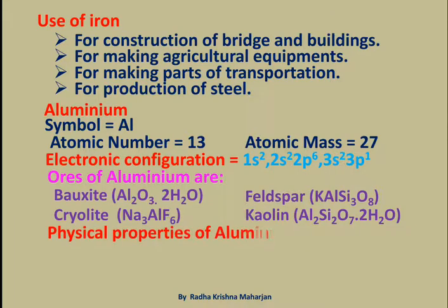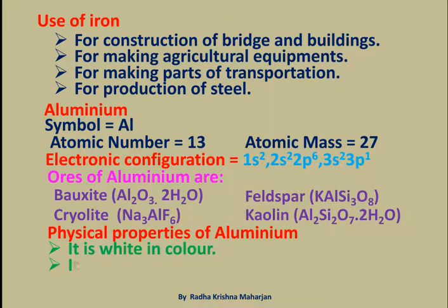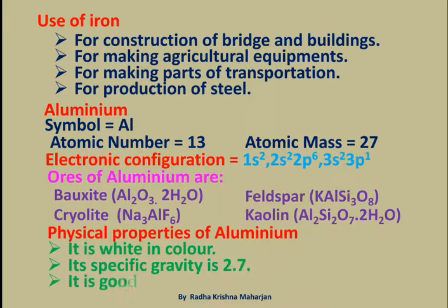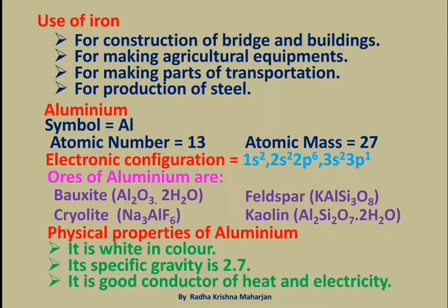Physical Properties of Aluminium: It is white in color. Its specific gravity is 2.7. It is a good conductor of heat and electricity.